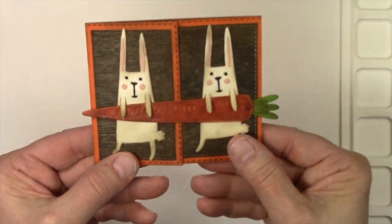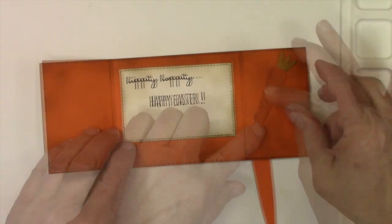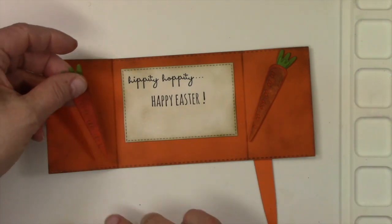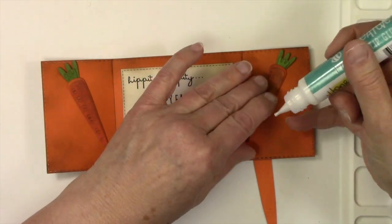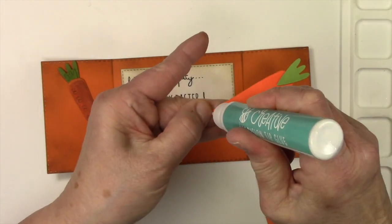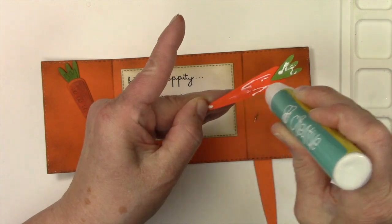I also added a little bit of glitter to the carrot because, you know, most carrots have glitter. In my world, they do. And I wanted to cover up the brad and make the inside of this a little more interesting. So I just put me a couple more carrots on the inside.